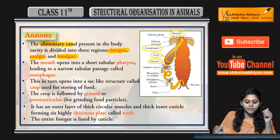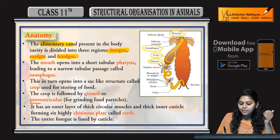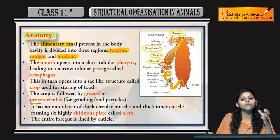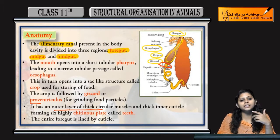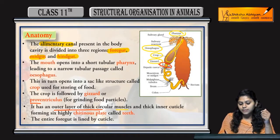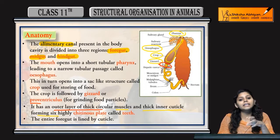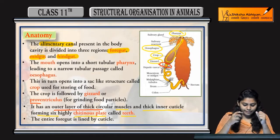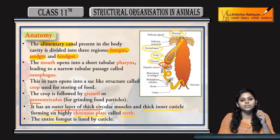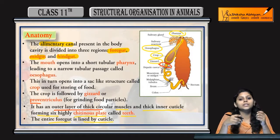Then the gizzard is there — the gizzard is also called proventriculus. All grinding of food occurs in the gizzard; it has an outer layer of thick circular muscles and a thick inner cuticle forming a layer of chitinous plates, also called teeth, which grind the food particles. The entire foregut, from mouth to gizzard, is lined by a cuticle.